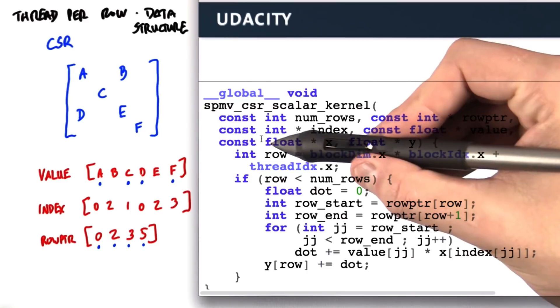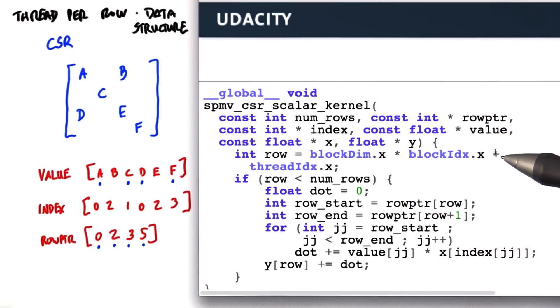We're going to start by this line here, computing the global index for each thread. The thread with this index i will calculate the result for row i.